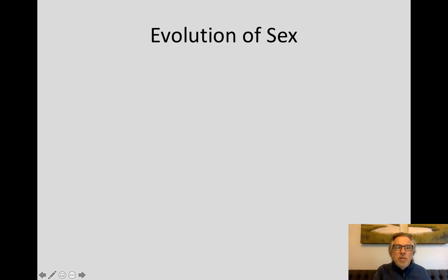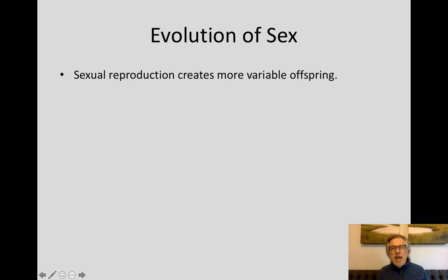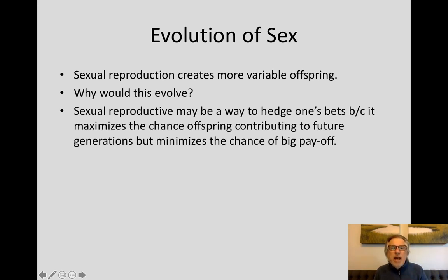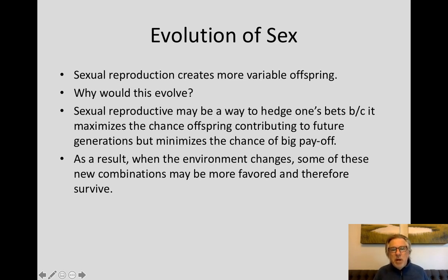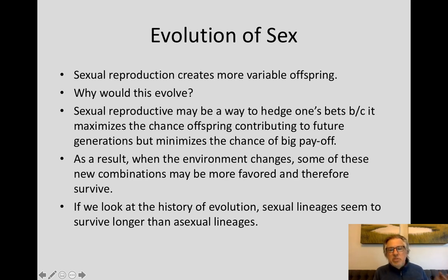What is the purpose of all this genetic variation? Sexual reproduction creates more variable offspring — but why would this evolve? Sexual reproduction seems to be a bet-hedging strategy. It maximizes the chance of offspring contributing to future generations, but minimizes the chance of a really big payoff. When the environment changes, some of the new combinations may be more favored and therefore survive. Since the environment is constantly changing, sexual reproduction puts out a suite of offspring, some of which will survive. If the environment doesn't change and an individual is very well adapted, asexual reproduction might be the best strategy. But when the environment is changing, sexual reproduction is selected for. The history of evolution suggests that sexual lineages survive longer than asexual lineages.